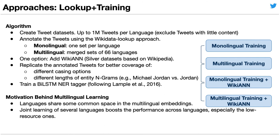Next, we use our lookups to tag tweets and form training sets — both monolingual and multilingual — where we combine the data of 66 languages. We also experiment with the addition of the Wikipedia-based dataset WikiNEuRal.